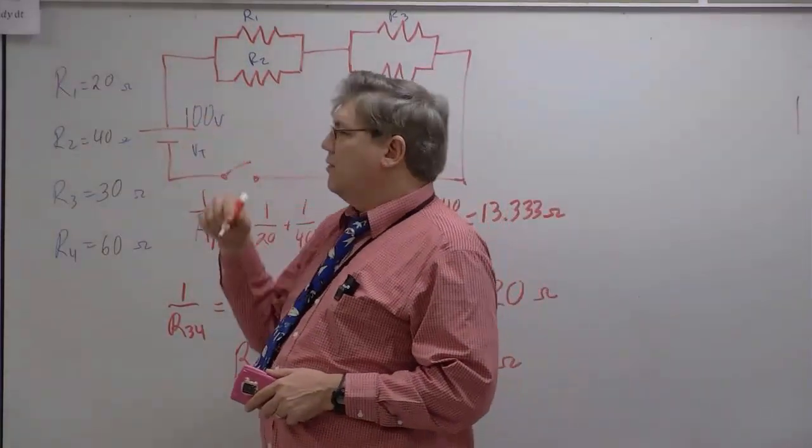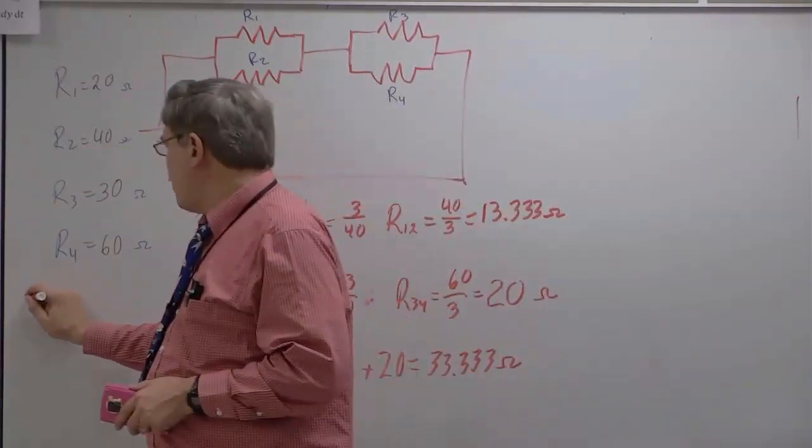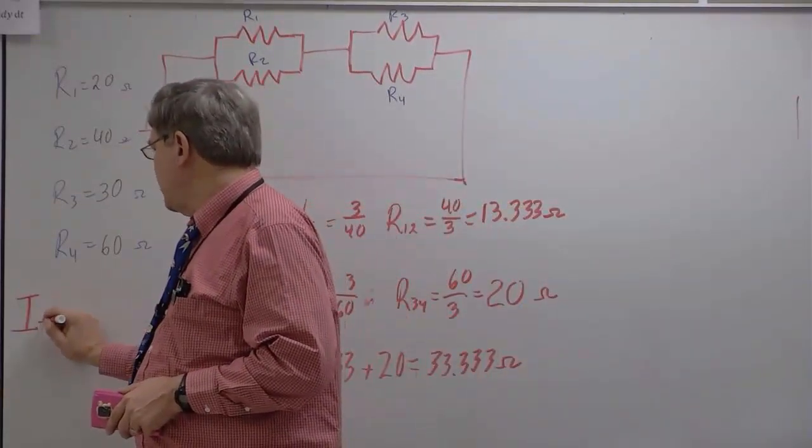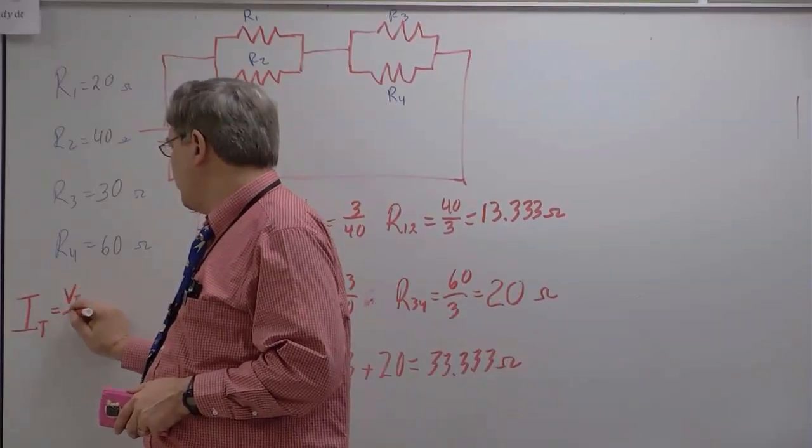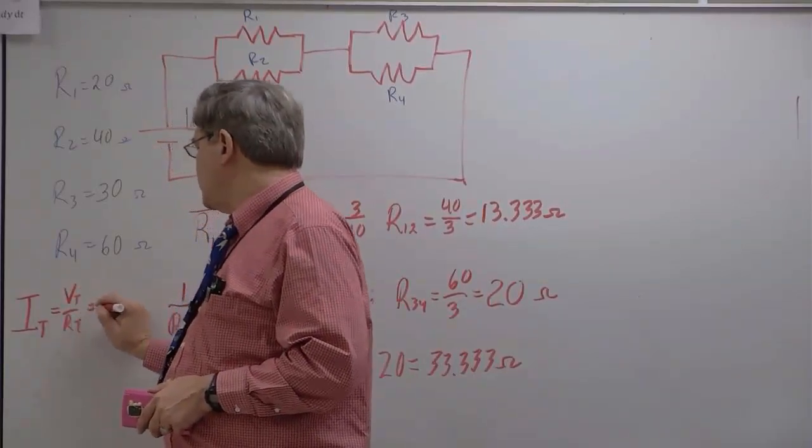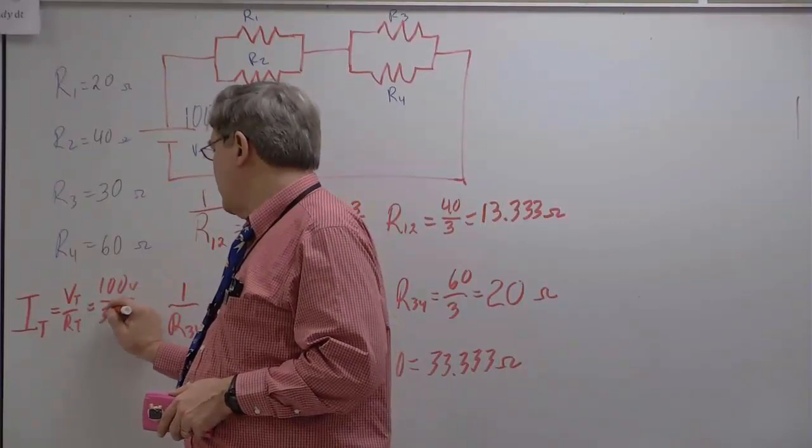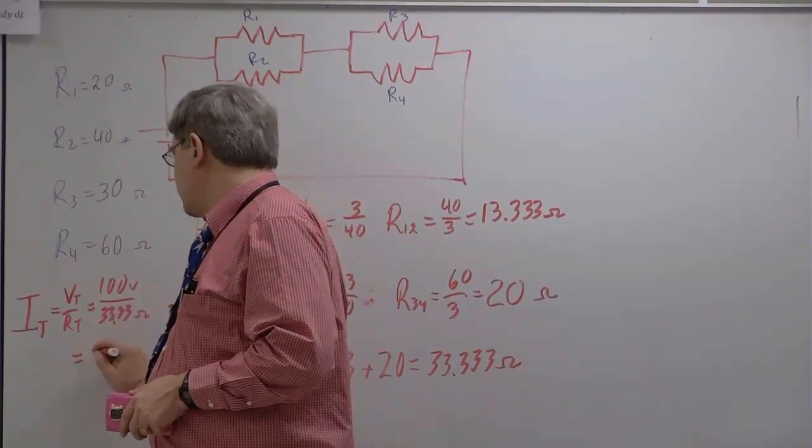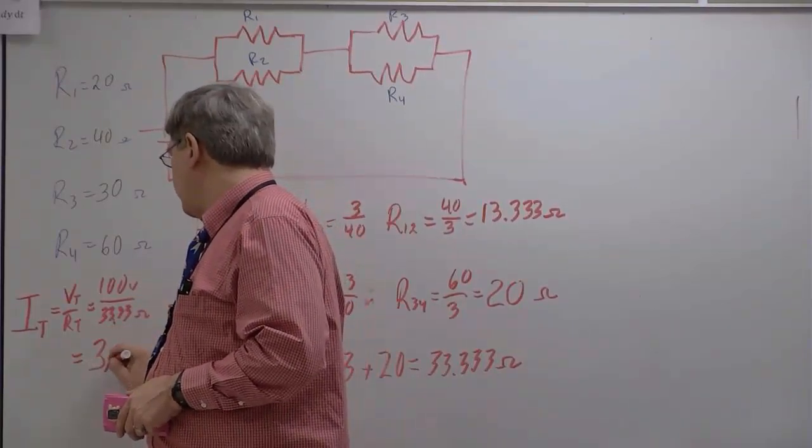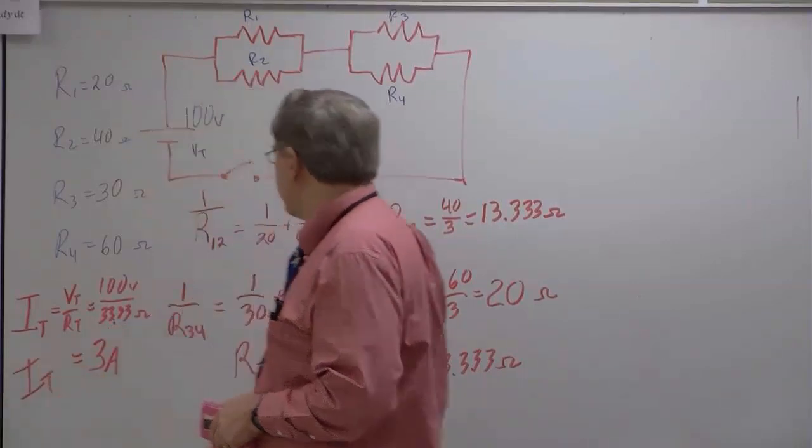If my voltage is 100 volts, then I can solve for my IT, my current total, that's going to be equal to VT over RT, which is equal to 100 volts divided by 33.33 ohms. So that's obviously equal to 3 amps. So IT is equal to 3 amps.